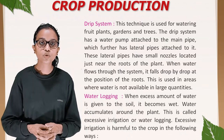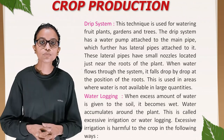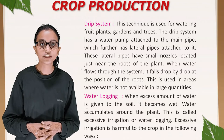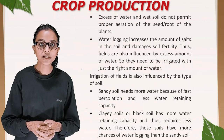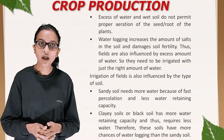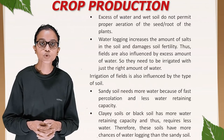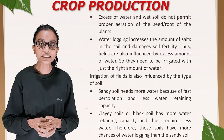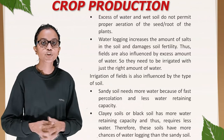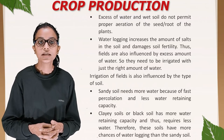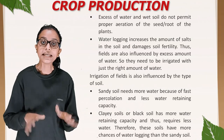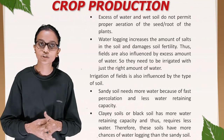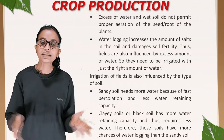Water logging: when excess water is given to soil, it becomes wet and water accumulates around the plant — this is called excessive irrigation or water logging. It is harmful because excess water does not permit proper aeration of the seed roots, and water logging increases the amount of salts in the soil, damaging soil fertility. Fields must be irrigated with just the right amount of water. Irrigation also depends on soil type: sandy soil needs more water due to fast percolation and low water-retaining capacity, while clay or black soil has more water-retaining capacity and requires less water but has more chances of water logging.